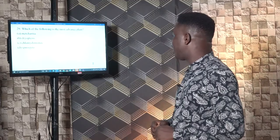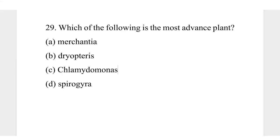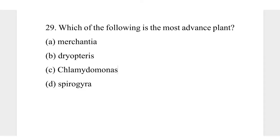Question 29. Which of the following is the most advanced plant? A, Marchantia; B, Dryopteris; C, Chlamydomonas; D, Spirogyra. Spirogyra and Chlamydomonas are unicellular organisms, so they are the least advanced plants here. Marchantia is a Bryophyta and Dryopteris is a Pteridophyta. Pteridophytas are more advanced than Bryophyta. So the correct answer is B, Dryopteris.